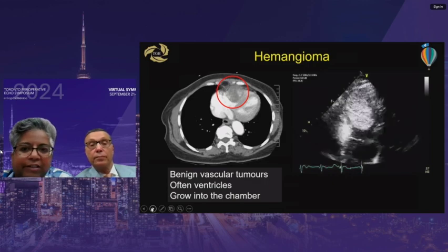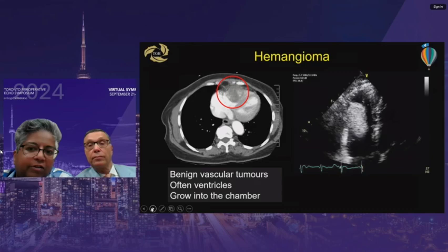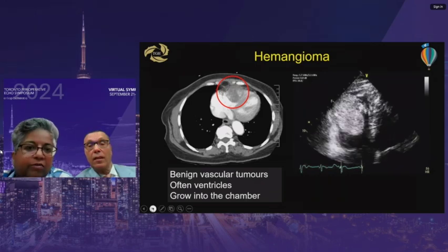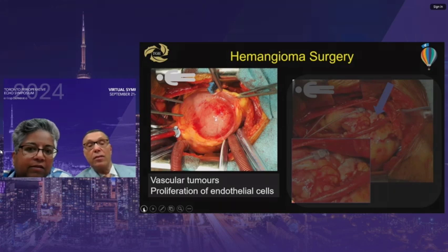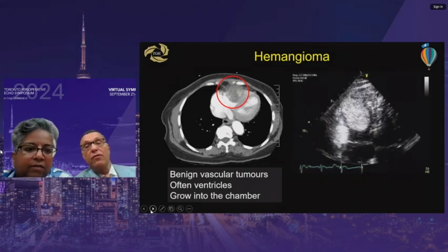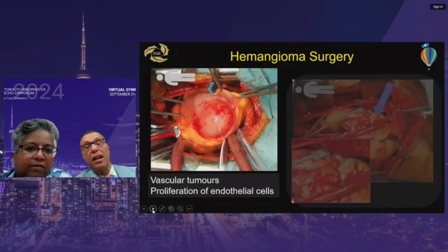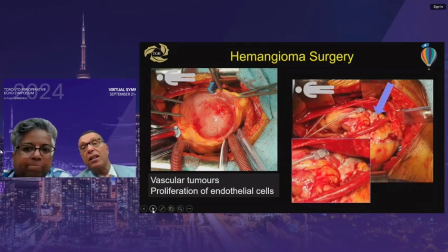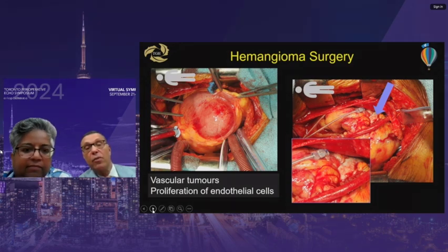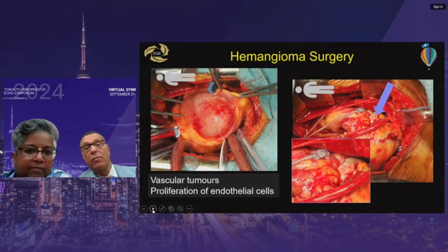Another hemangioma case — seen on CT scan as an endocavitary lesion involving the right ventricle. The tumor was quite large, seemingly filling most of the ventricular volume. At surgery, the seed-in-muscle principle was confirmed: the tumor spreads apart the myocardium. When the blue-area resection was completed, only a small amount of myocardium was actually lost. The principle holds: a tumor can be resected from the myocardium without losing many myocardial cells because it spreads them apart, and the intraventricular volume is replaced by blood.